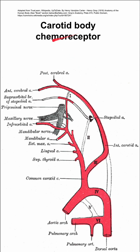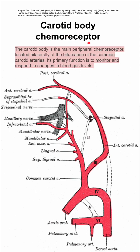Here are some notes on the carotid body chemoreceptor. The carotid body is the main peripheral chemoreceptor. It's located bilaterally on both sides of the neck at the bifurcation of the common carotid arteries. You can see the common carotid artery here bifurcate, so the carotid body chemoreceptor will be somewhere in this region.